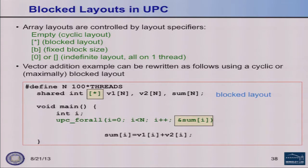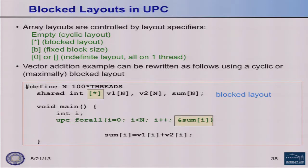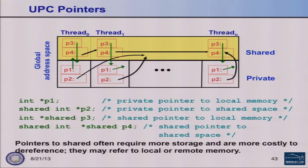In the vector addition example with a blocked layout, using '&sum[i]' as the affinity expression would give correct results — each element is computed once — but performance would be terrible because each thread would add pairs of elements that live on other threads most of the time. This illustrates why the choice of affinity expression matters for performance, not just correctness.